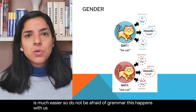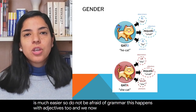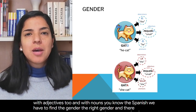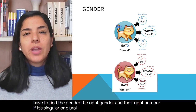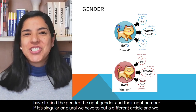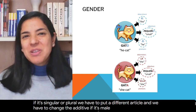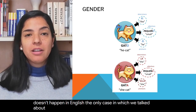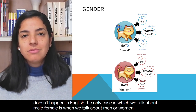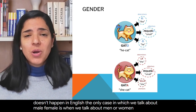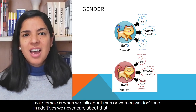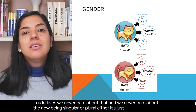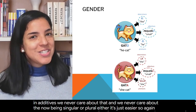This happens with adjectives too and with nouns. You know in Spanish we have to find the right gender and the right number — if it's singular or plural. We have to put a different article and we have to change the adjective if it's male or female, etc. This doesn't happen in English. The only case in which we talk about male or female is when we talk about men or women. In adjectives we never care about that, and we never care about the noun being singular or plural either. It's just easier. So again, don't be afraid of grammar.